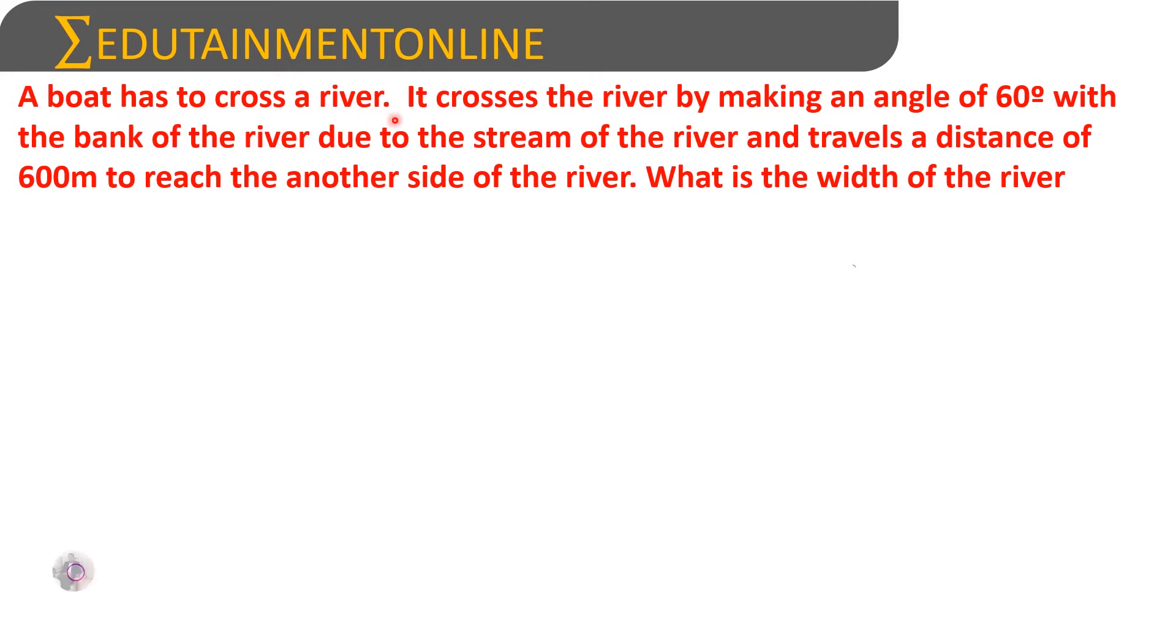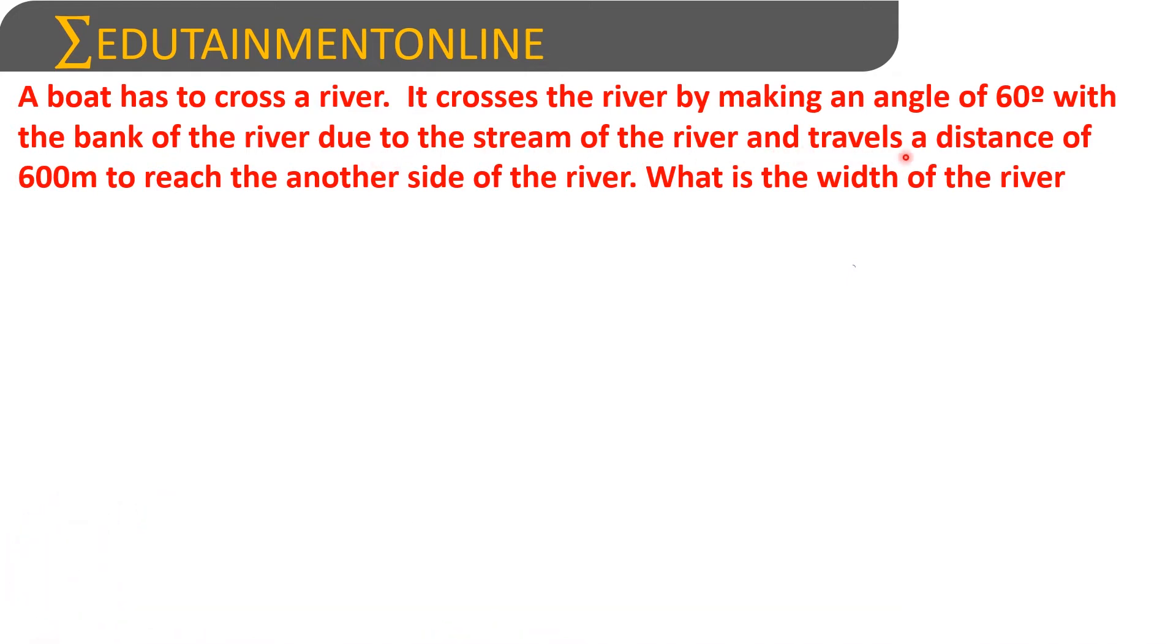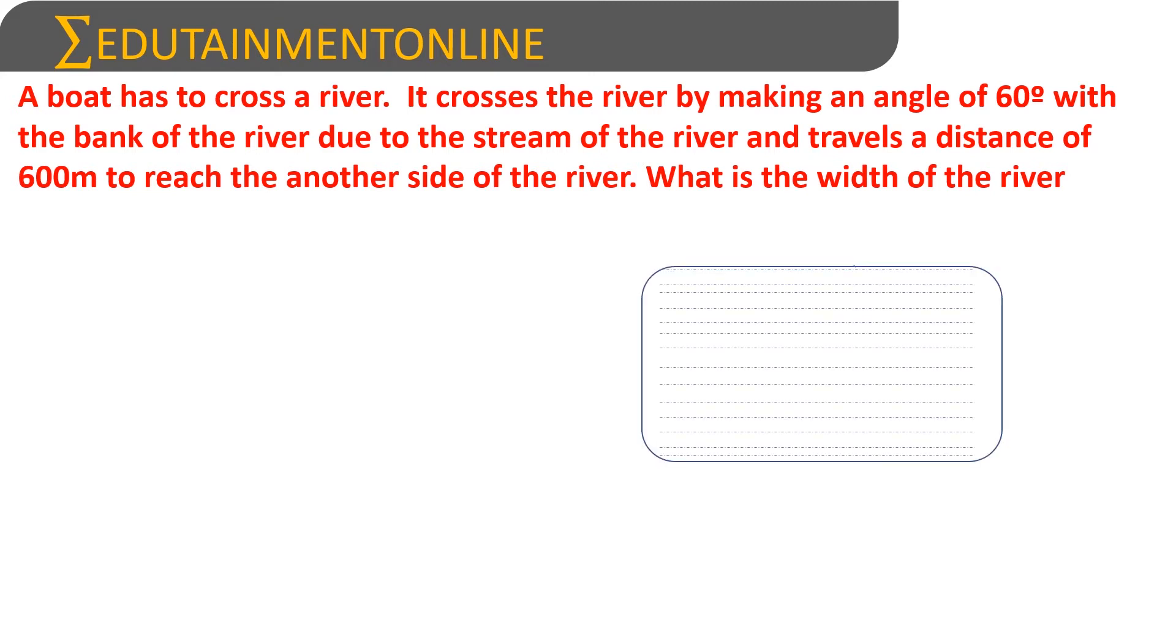A boat has to cross a river. It crosses the river by making an angle of 60 degrees with the bank due to the stream and travels a distance of 600 meters to reach the other side. What is the width of the river? Let us consider this as the river, so this is the width of the river.